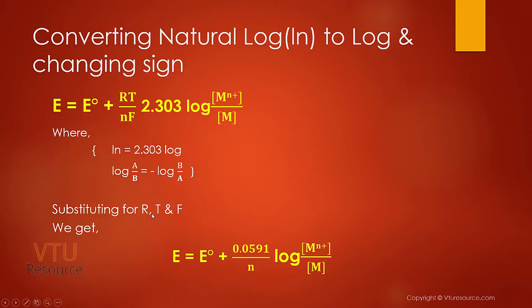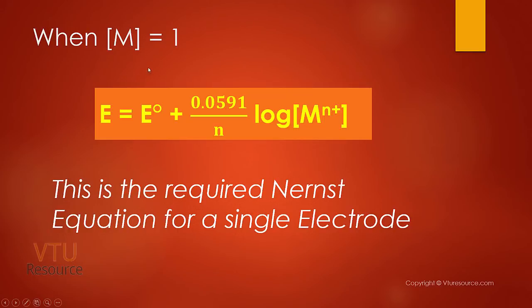Substituting for the gas constant R, temperature T, and Faraday's constant of 96500 coulombs, we get: E equals E0 plus (0.0591 / N) log [concentration of M(n+) / concentration of M]. When concentration of M equals 1, this simplifies to: E equals E0 plus (0.0591 / N) log [concentration of M(n+)]. This is the required Nernst equation for a single electrode.